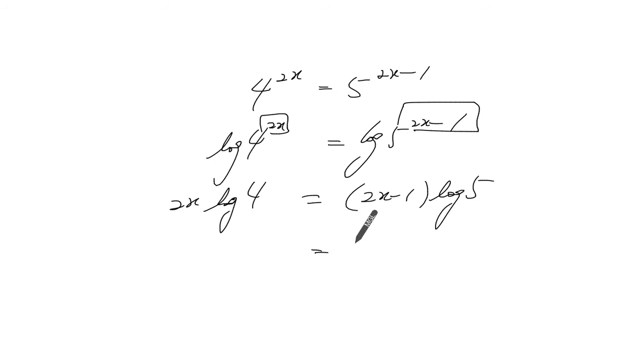So here we have to actually expand the brackets. You get 2 log of 5 times by x minus log of 5, equals 2x log of 4.